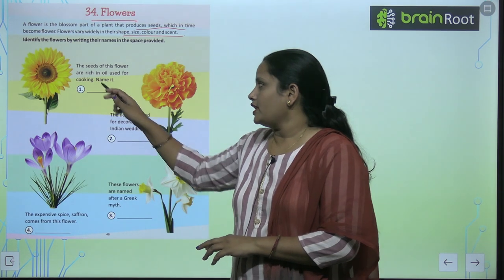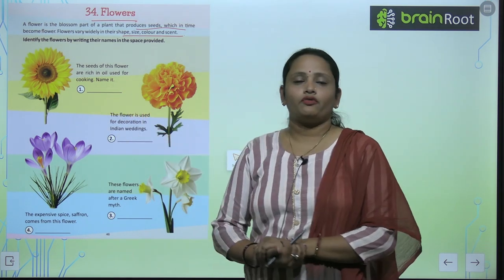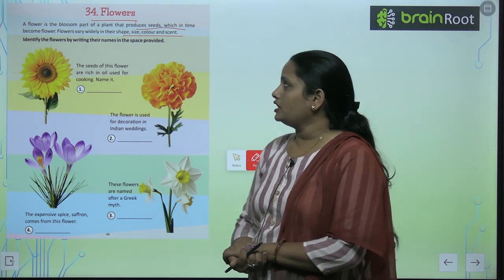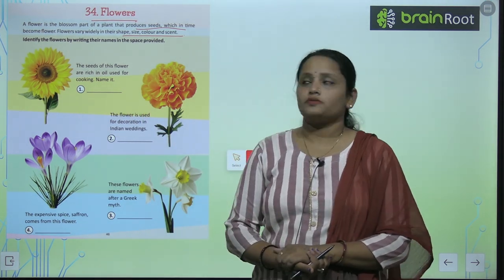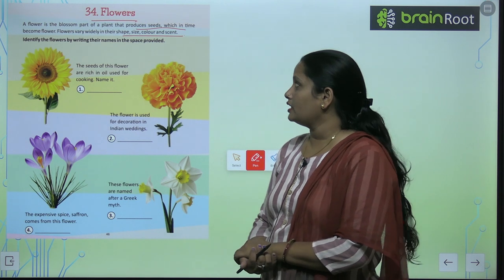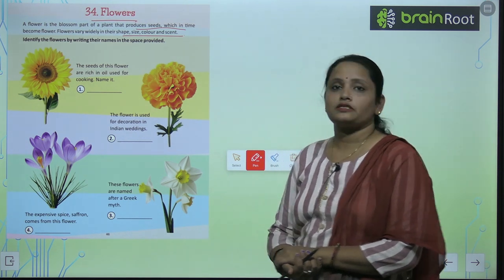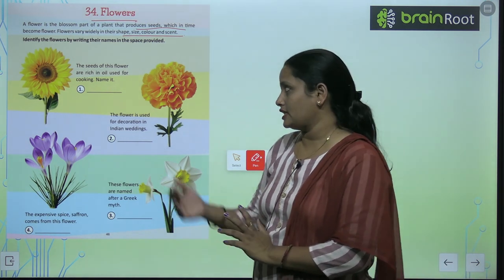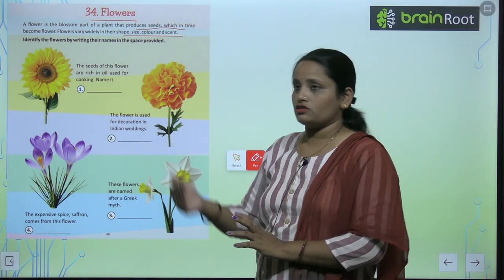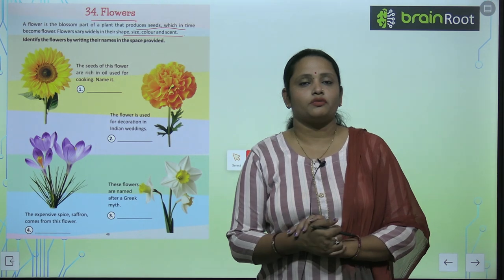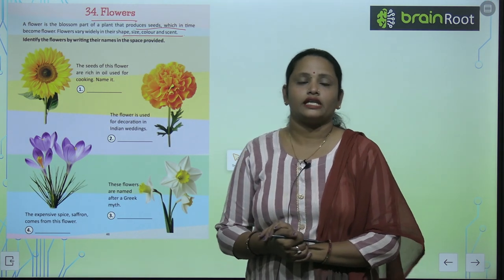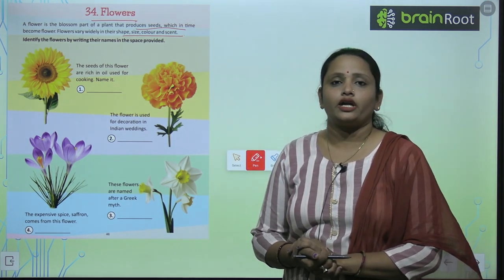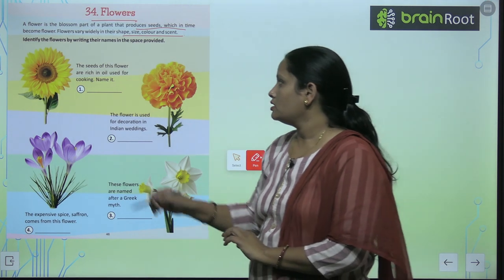Let's identify the given flowers. Identify the flowers by writing their names in the space provided. Here you have some pictures of flowers and some information that you have to see, and then we have to write down their names.